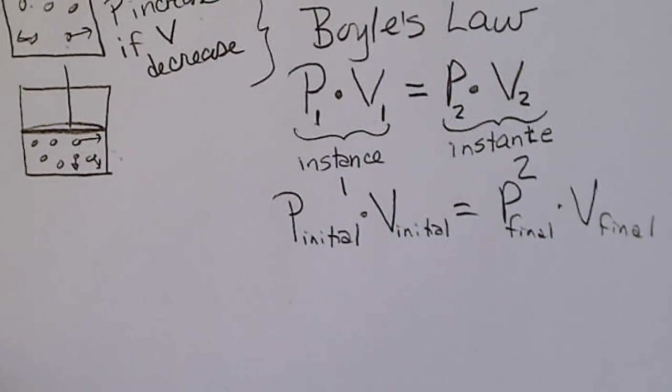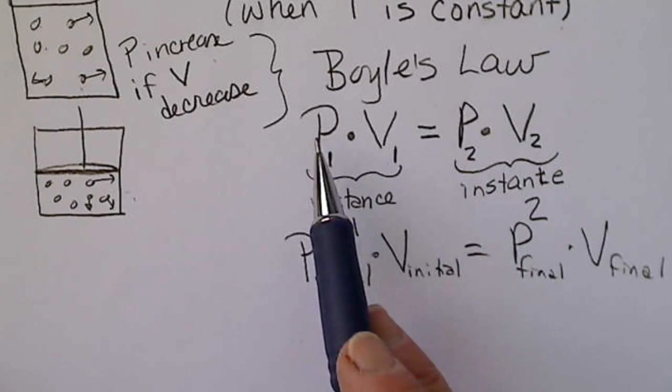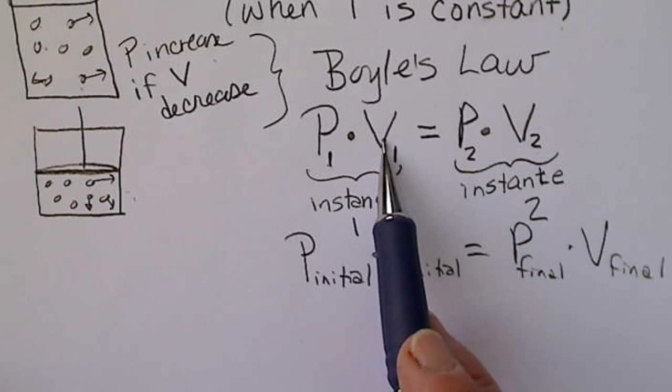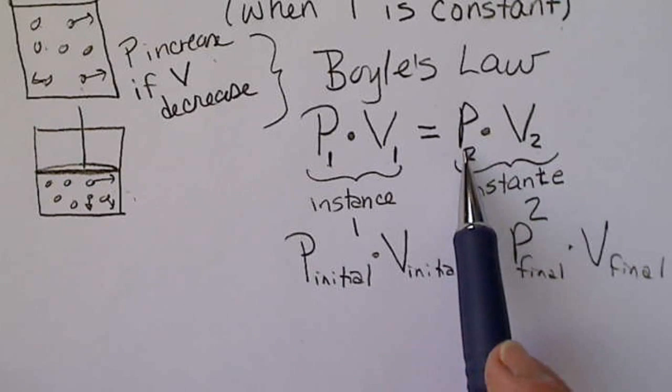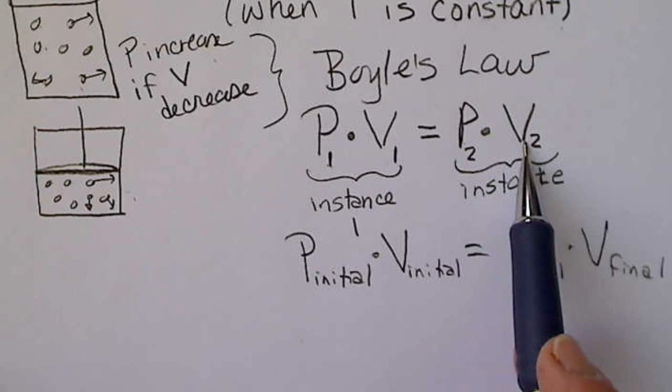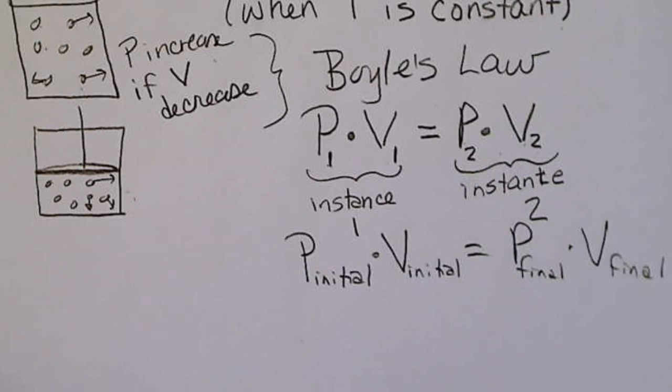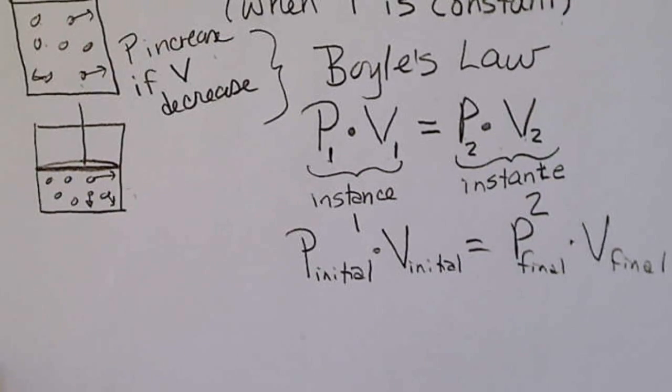And what Boyle's Law tells us, one of the things, if we think about any two numbers, if we multiply two numbers together, if we change one of the numbers like double this, then this factor would have to go down, because the product of these two parameters for a gas always have to equal each other.